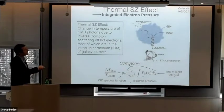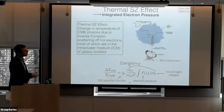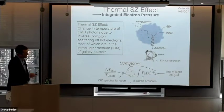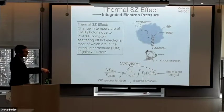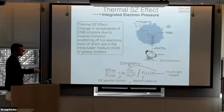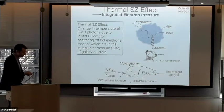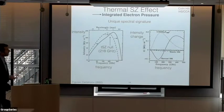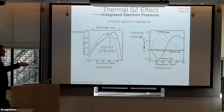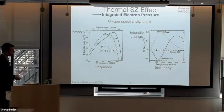Then we have the thermal SZ effect: the change in temperature of CMB photons as inverse Compton scattering off hot electrons. Most of these are found in the intracluster medium of galaxy clusters, where the potential wells are so deep that the electron gas temperature is very high. This distorts the spectrum of the CMB, unlike the kSZ effect. It's given by this particular line-of-sight integral of the electron pressure, characterized by the dimensionless Compton y-parameter. The kSZ probes the integrated electron momentum; the tSZ probes the integrated electron pressure. This produces a decrement in CMB intensity at low frequencies and an increment at high frequencies, with a null at around 217–218 GHz.